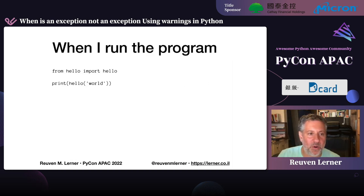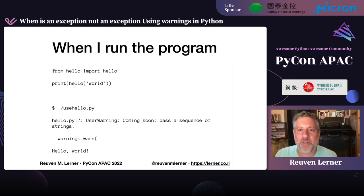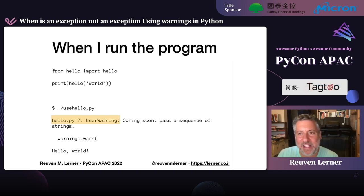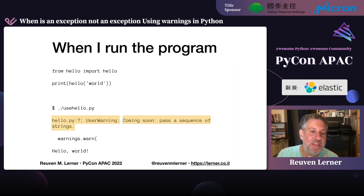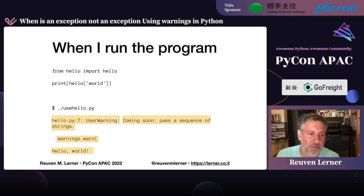Now if I run the program — 'from hello import hello' and 'print(hello("world"))' — look at this: I get a UserWarning saying 'coming soon, pass a sequence of strings.' The output from the warning system tells you the file name and line number, what kind of warning it is, and the message I passed. Importantly, warnings don't stop the program from running — the program still runs, it just adds the warning information. Hello world is still printed.